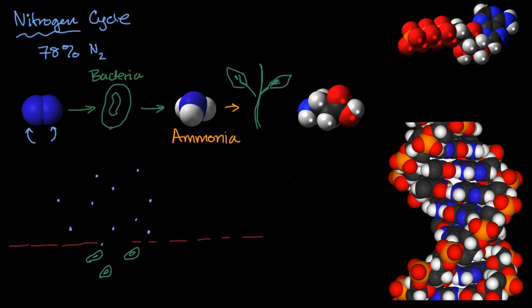So this right over here is an amino acid. You see the nitrogen right over there. This right over here is our good old friend ATP, adenosine triphosphate, the store, the quick store of energy in biological systems. You see the nitrogen in blue right over here. This is the famous DNA, deoxyribonucleic acid. And you see the nitrogens throughout this macromolecule.